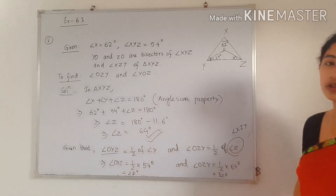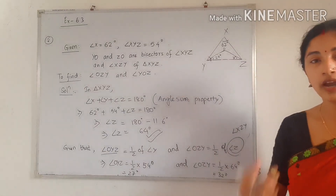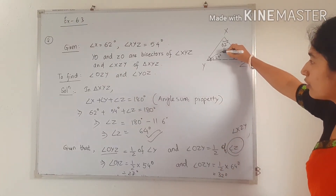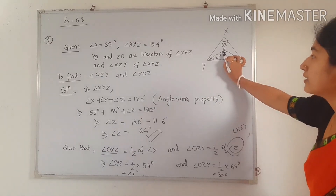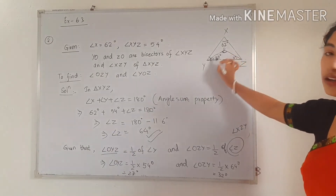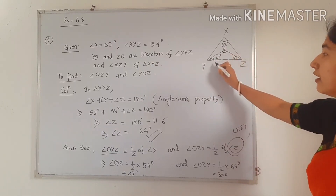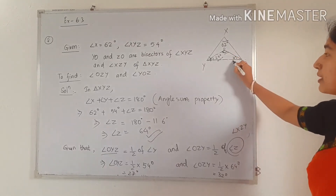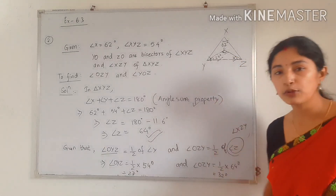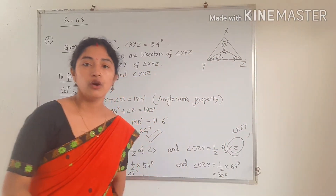This is the solution of this question. If they ask to find angle O, triangle OYZ makes a full triangle. So angle O plus 27 degrees plus 32 degrees equals 180 degrees by angle sum property. By that way, we can also find the value of angle O.